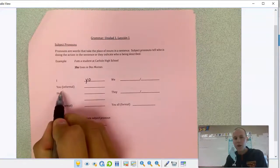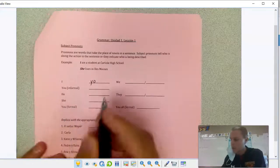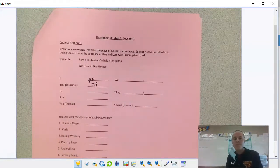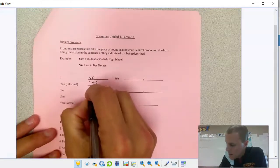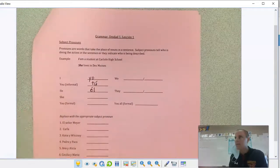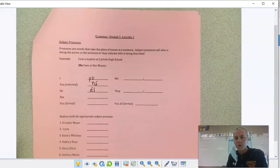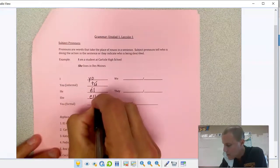If I want to say you informally, remember we said como estas, that was informal. There's an informal you, it's the word tú with an accent over the u. Tú is informal you. I want to say he: él, also has an accent. Él for she is the word ella, remember that double L is a ya sound, ella.